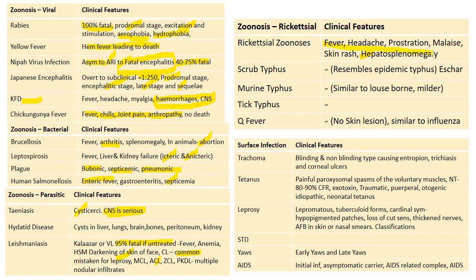Cutaneous leishmaniasis is common and usually mistaken for leprosy. Rickettsial zoonosis presents with fever, headache, prostration, malaise, skin rash, and hepatosplenomegaly. Absence of skin lesions distinguishes Q fever from other rickettsial diseases. Q fever more often resembles influenza. In scrub typhus, eschar is a classical pathognomonic feature. Murine typhus is similar to louse-borne typhus but always milder.